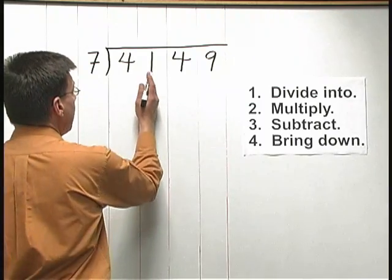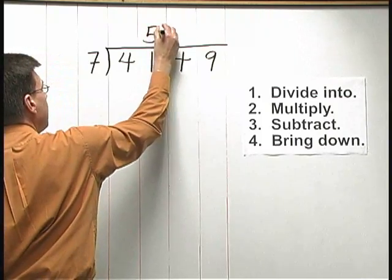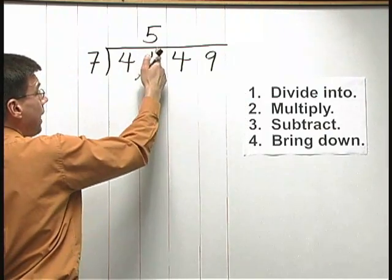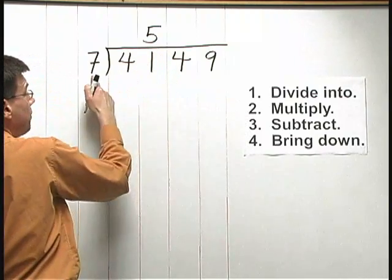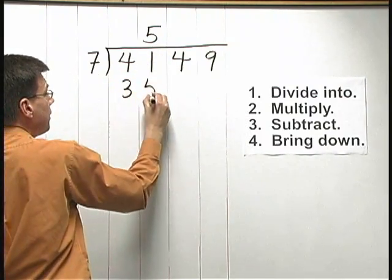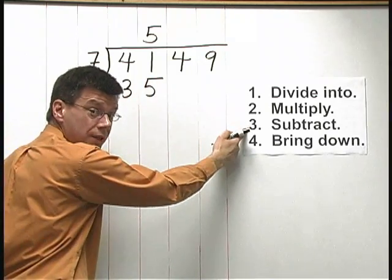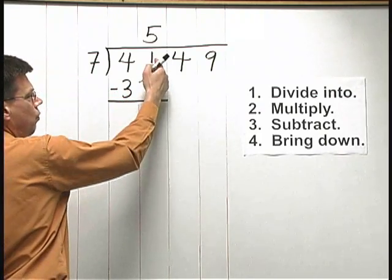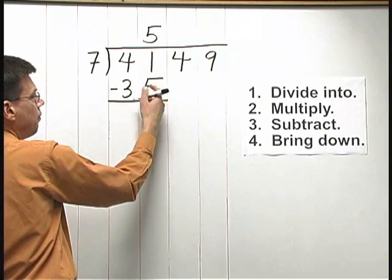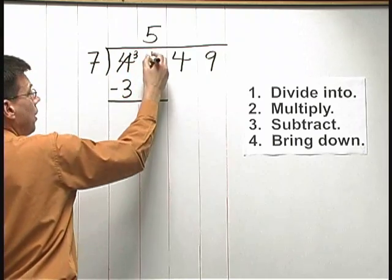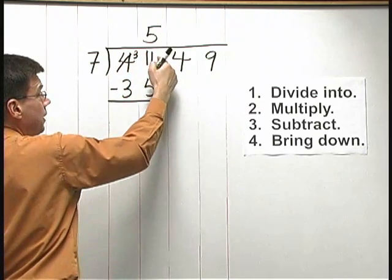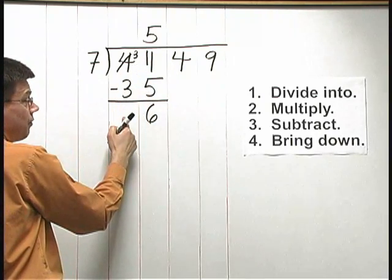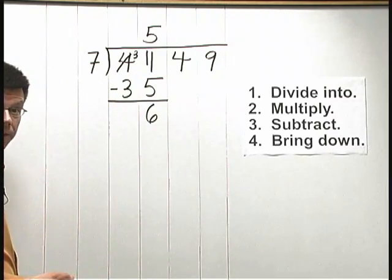I write the 5 right above the 1. That's my divide-into step, step 1. Next, we multiply: 5 times 7 is 35. And after we multiply, we subtract. 41 minus 35. 1 minus 5 I can't do, so I need to borrow. 4 becomes a 3, 1 becomes 11. 11 minus 5 is 6. 3 minus 3 is 0. So I get 6 after my subtract step.